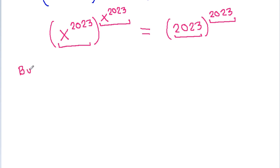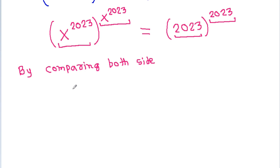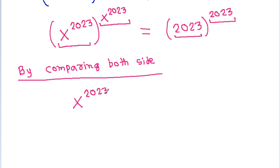So, by comparing both sides, we can get x power 2023 is equal to 2023.